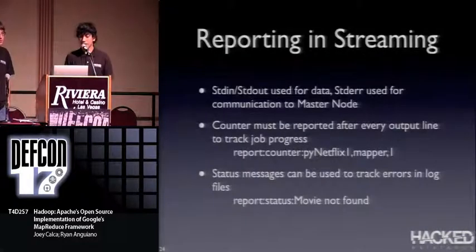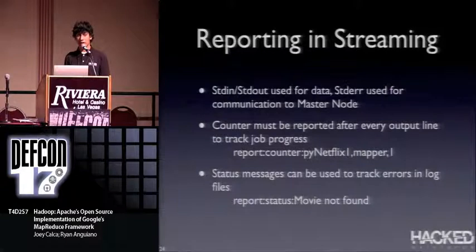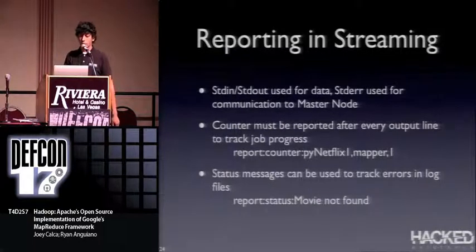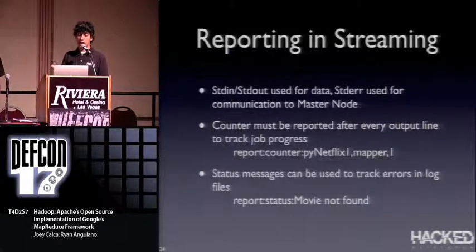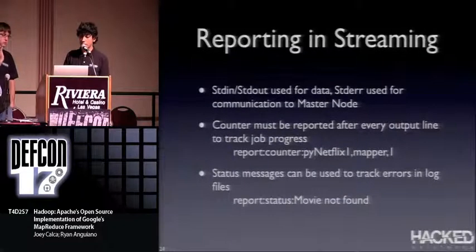For reporting in streaming: since you're using standard in and standard out to handle data, you use standard error to communicate with the master node. Because the master node kills any job that doesn't report back, you have to write a counter after every line you process — writing to standard error in the form 'reporter:counter,jobname,phase,1'. You can also use status messages to track errors in the log files.